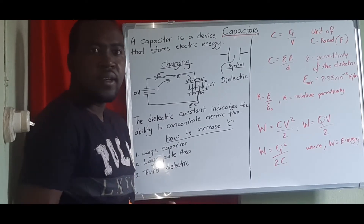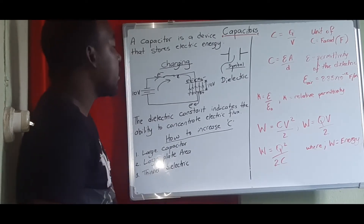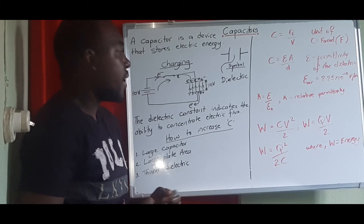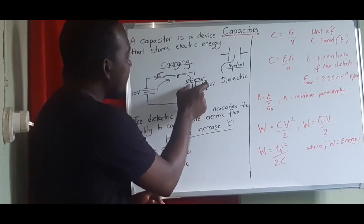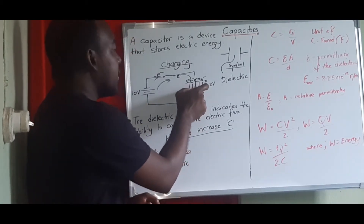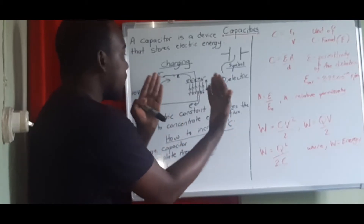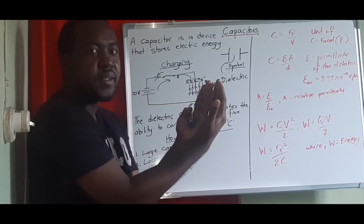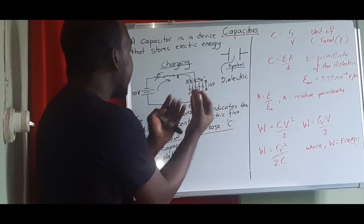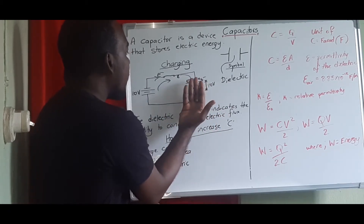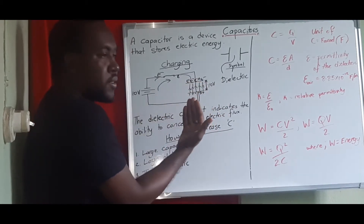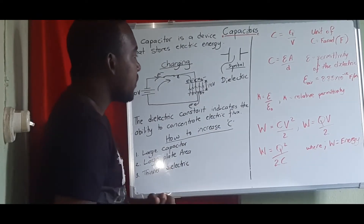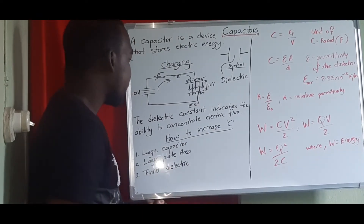The dielectric constant represents an insulator that indicates the ability to concentrate electric flux. The dielectric actually brings the electric field lines closer together. That's the purpose of the dielectric — to ensure the lines are closely packed together so they can store the electric charges and energy.